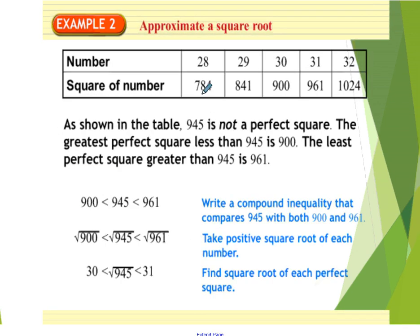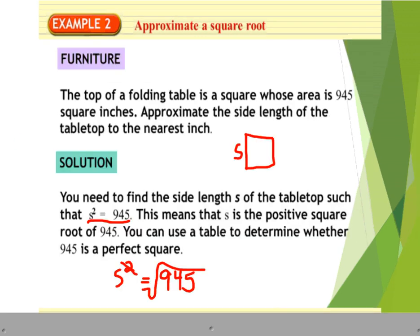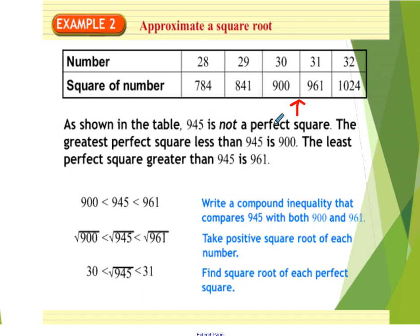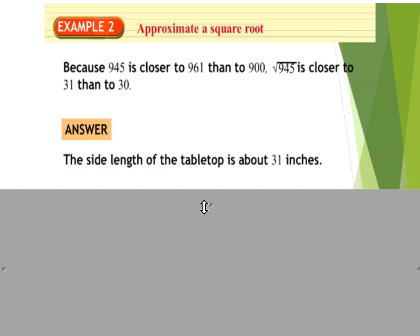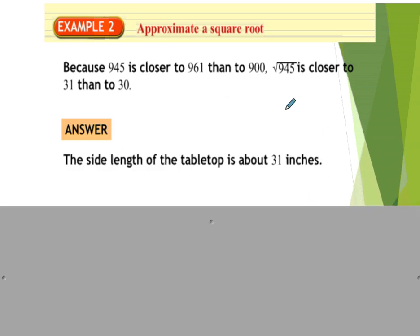Looking at a perfect squares chart, 945 is not a perfect square because 30 squared is 900 and 31 squared is 961 — it's somewhere in between. Since 945 is closer to 961 than to 900, it's closer to 31 than to 30. So the side length of the tabletop is about 31 inches.